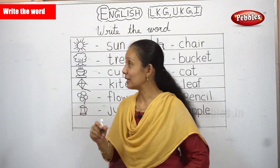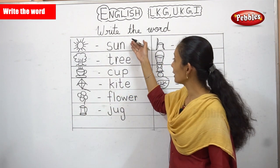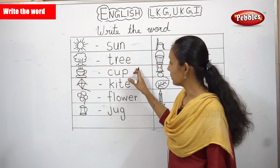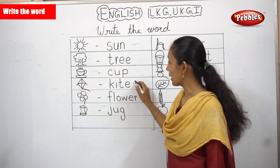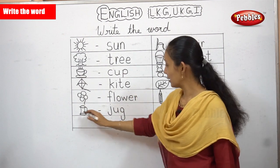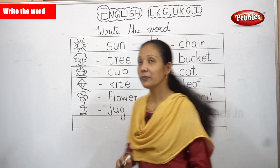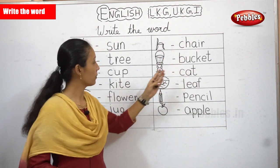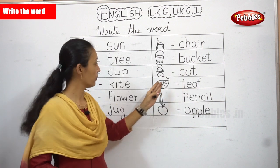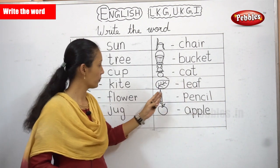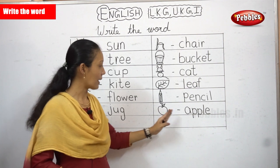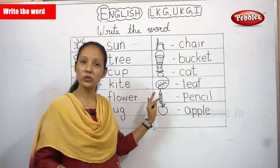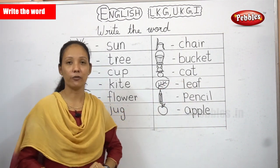Now you have about 10 to 12 pictures. The first one is sun, tree, cup, kite, flower, jug, chair, bucket, cat, leaf, pencil and apple. In the same way, you can also draw pictures and learn to write the spelling for them.